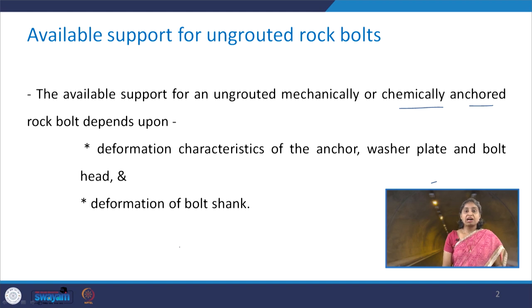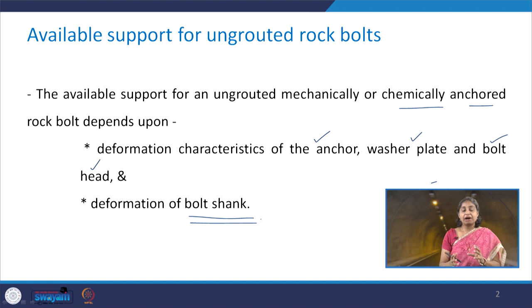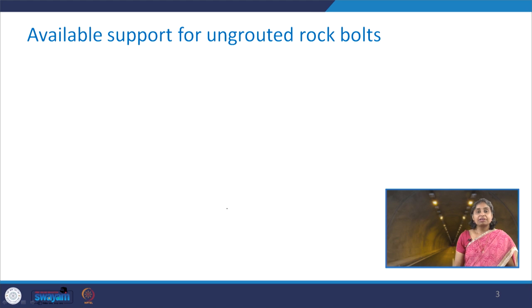The available support for ungrouted bolts - we will take this first. The available support for an ungrouted rock bolt which is mechanically or chemically anchored in the rock mass depends upon the deformation characteristic of the anchor, washer plate and bolt head, and the deformation of the bolt shank. Before we understand these deformation characteristics, let us first understand the various components of such rock bolts.